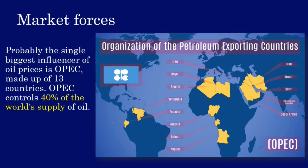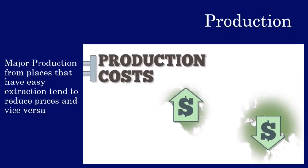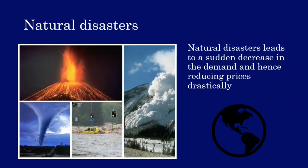Market forces are yet another major factor. OPEC — the Organization of Petroleum Exporting Countries — controls about 40% of the world's supply of oil, and previously controlled an even higher margin. By restricting production, OPEC can force prices to rise or fall and thereby enjoy much greater profits. Geography of the production site also controls prices — if extraction is easy, prices fall, and vice versa. Finally, natural disasters lead to a sudden decrease in demand, drastically reducing prices.